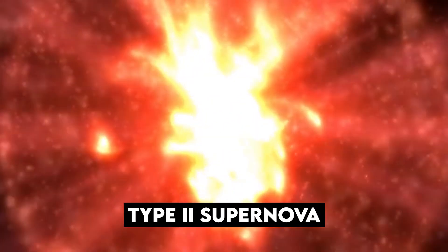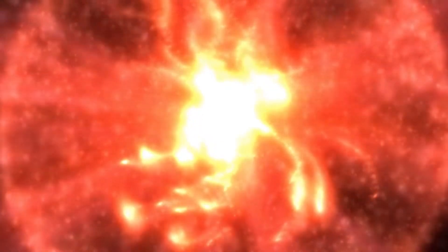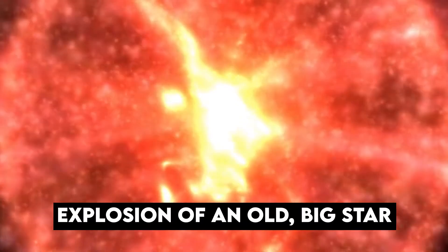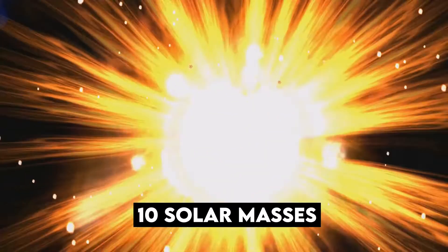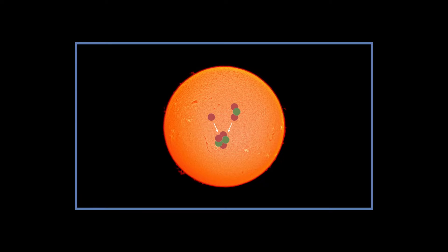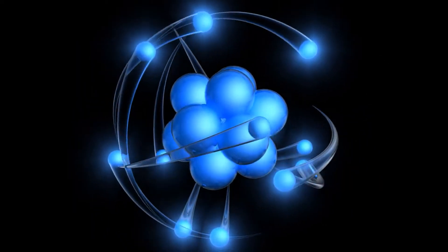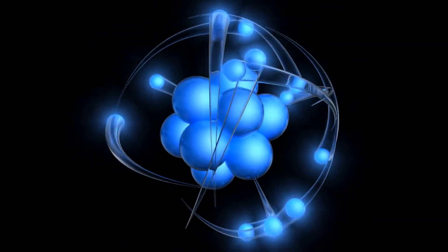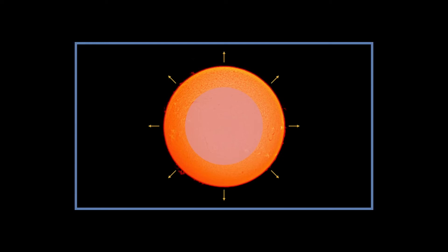But when it comes to a type 2 supernova, it occurs as a result of the explosion of an old big star. A type 2 supernova occurs in stars with masses of more than 10 solar masses. It begins fusing progressively heavier elements in shells surrounding the center after leaving the main sequence. The energy produced by the fusion process in the core eventually becomes inadequate to resist gravity and the core collapses.